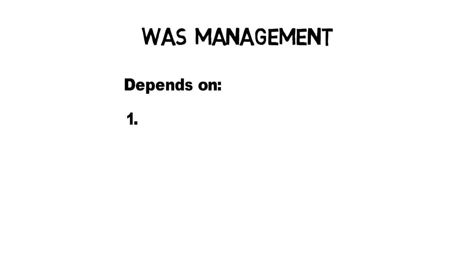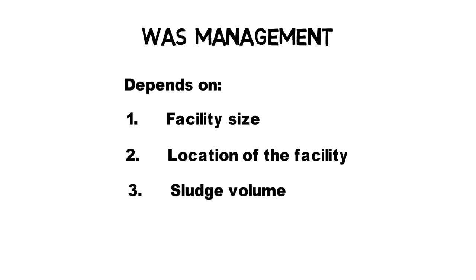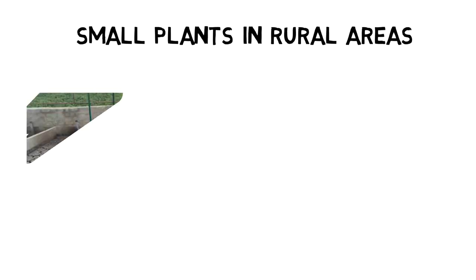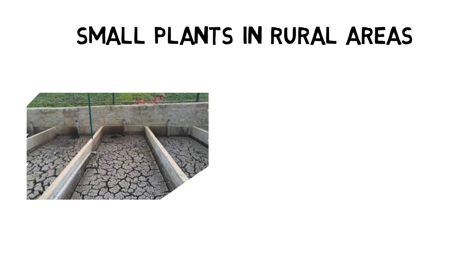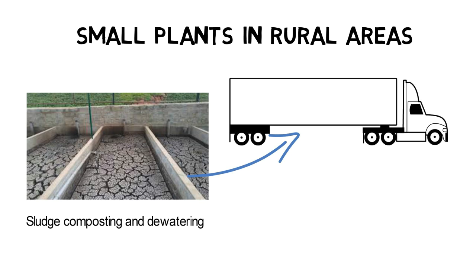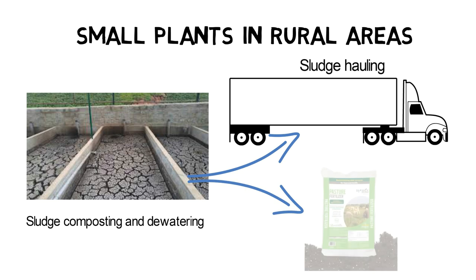Depending on the size of the facility, location, and sludge volume, different solid-liquid waste management options are available. Smaller plants in rural areas often compost sludge and/or use sludge drying beds for dewatering. The remaining sludge cake is either hauled off and disposed in landfills, or, in case the sludge doesn't contain toxic components, it's used as fertilizer.